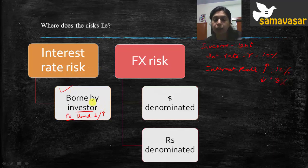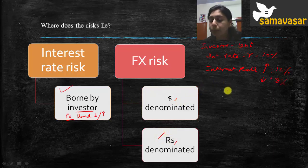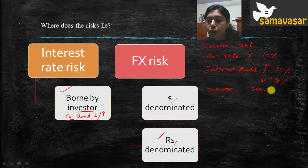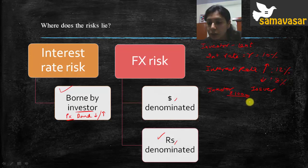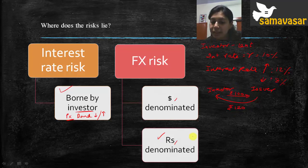There is also FX risk, which depends on whether the bond is dollar denominated or rupee denominated. Since Masala Bonds are rupee denominated, let's trace a simple example. The issuer issues bonds worth rupees 100. The investor gives the issuer rupees 100, and in return the issuer pays coupon payments and the maturity amount — say, a total of rupees 120. If the bond were dollar denominated, these amounts would be in dollars, but here they are in rupees.